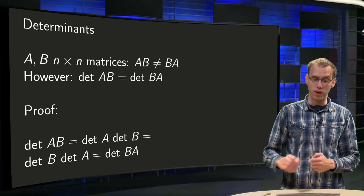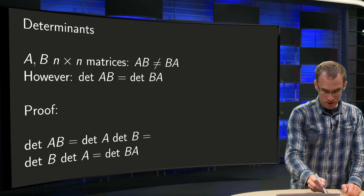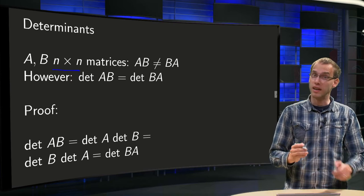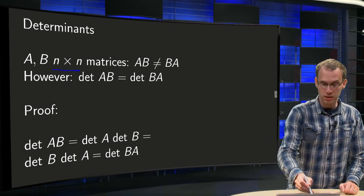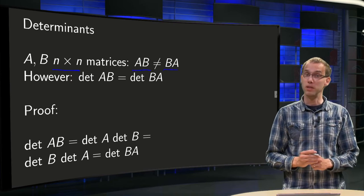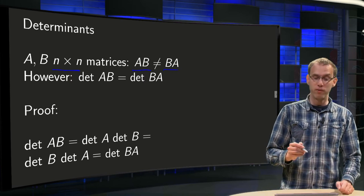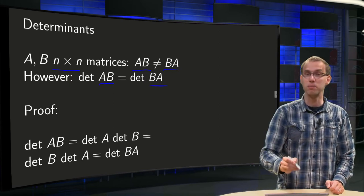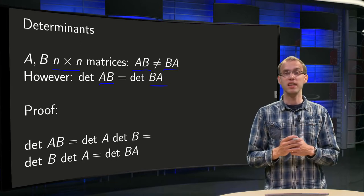If A and B are square matrices, n times n matrices, then in general A times B is not equal to B times A. However, we can show that the determinant of AB and the determinant of BA are the same. Why is that?